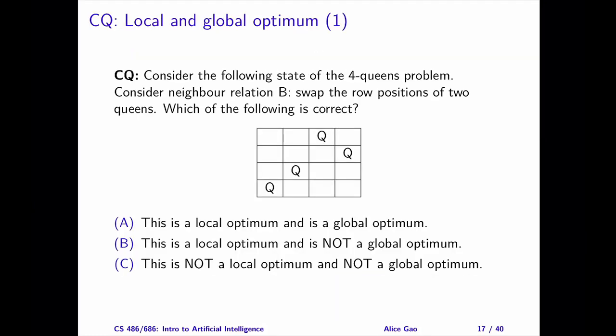Now that we have defined local and global optimals formally, let's look at two practice questions. In each question, we're given a state of the four queens problem and the neighbor relation, and we're asked to determine whether the state is a local and/or global optimal. Question 1: The neighbor relation says to pick two queens and swap their row positions. Which of the following statements about local and global optimal are correct? Pause the video and choose an answer. The correct answer is C. This state is not the local optimum and not the global optimum. Please watch a separate video for a detailed explanation.